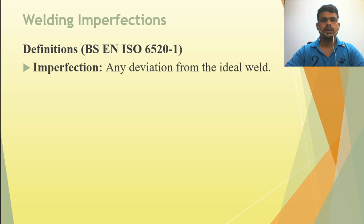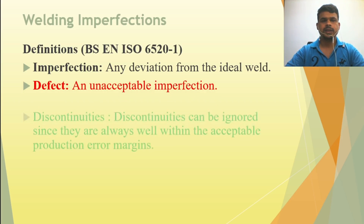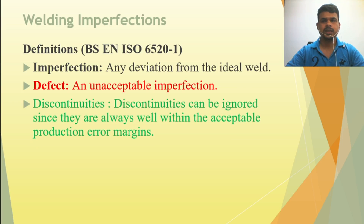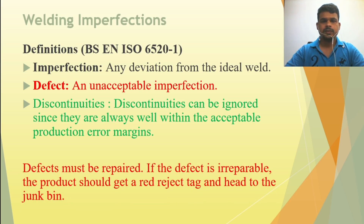Welding imperfection: an imperfection is any deviation from the ideal weld. A defect is an unacceptable imperfection. Discontinuities are imperfections within an acceptable range — they can be ignored since they are well within the acceptable production error margin. Remember: a defect must be repaired. If the defect is irreparable, the product should be rejected and sent to the scrap bin.